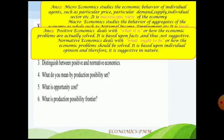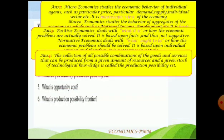Fourth two-mark question: what do you mean by production possibility set? The collection of all possible combinations of goods and services that can be produced from a given amount of resources and a given stock of technological knowledge is called the production possibility set. With these limitations of resources and technical know-how, the best possible production you can achieve is the production possibility set.